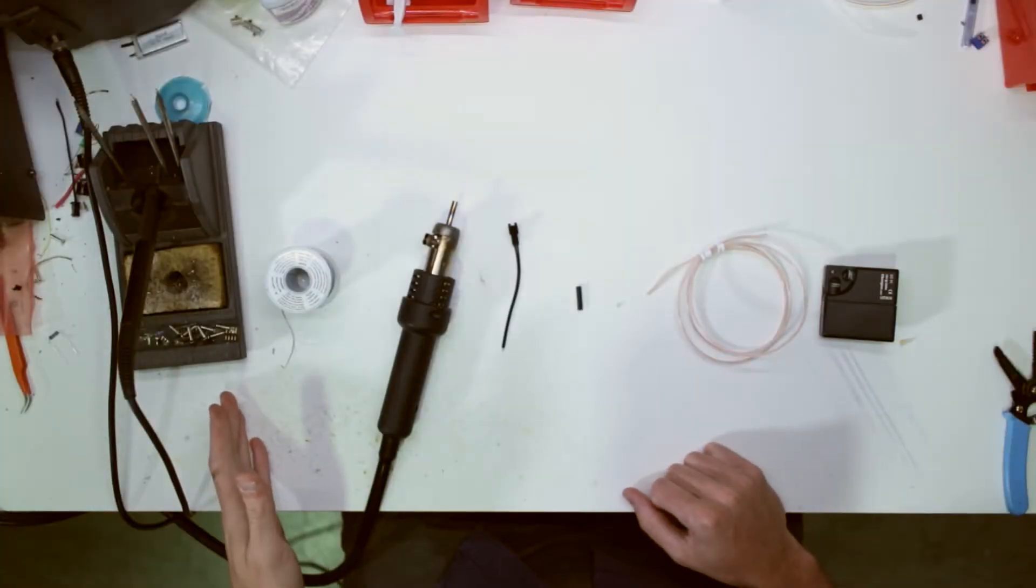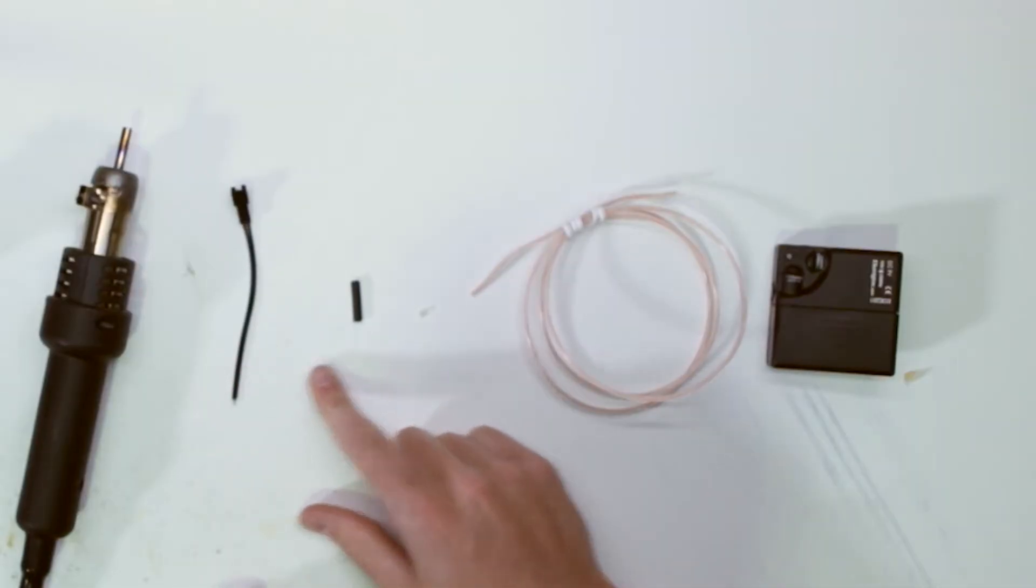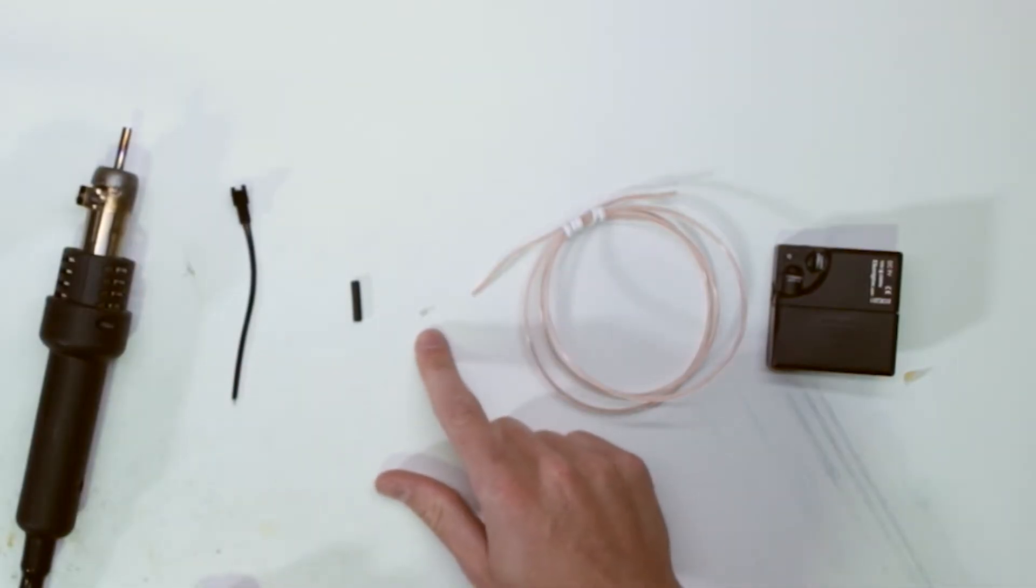So the first thing that you'll need is a soldering iron and solder, a heat gun, an easy snap connector, heat shrink tubing, an end cap, some EL wire, and a battery pack to test it all.